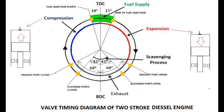Expansion Stroke: At the beginning of the expansion stroke, the piston which is at TDC starts moving towards BDC due to the combustion of the diesel sprayed charge during the compression stroke, and the power output is obtained. Air enters through the inlet port during the expansion stroke as the piston moves from TDC to BDC. The expansion stroke continues till the piston reaches BDC.